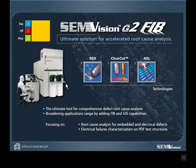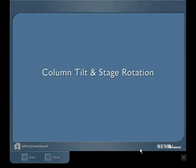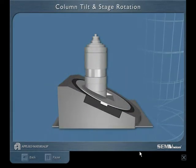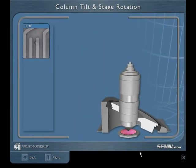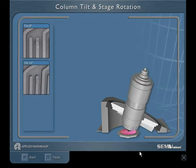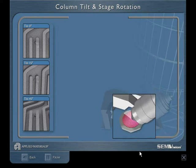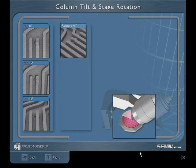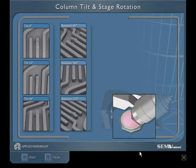At the top of the Semvision G2 product line, in addition to all the G2 HP capabilities, the Semvision G2 Plus incorporates engineering capabilities. Tilt and rotation — column tilt and stage rotation enhance defect root cause analysis and reveal essential information by imaging the defect from almost any desired angle.